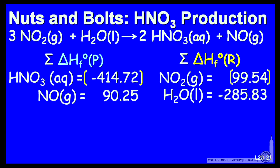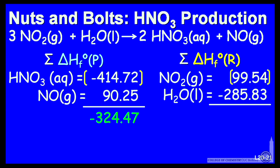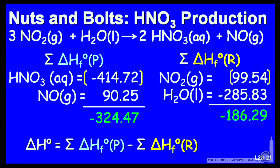Summing to find the sum of the enthalpies of formation of all the products and the sum of the enthalpies of formation of all the reactants: 324.47 kilojoules for the products, and minus 186.29 kilojoules for the reactants. Taking the products minus the reactants gives us minus 138.18 kilojoules.